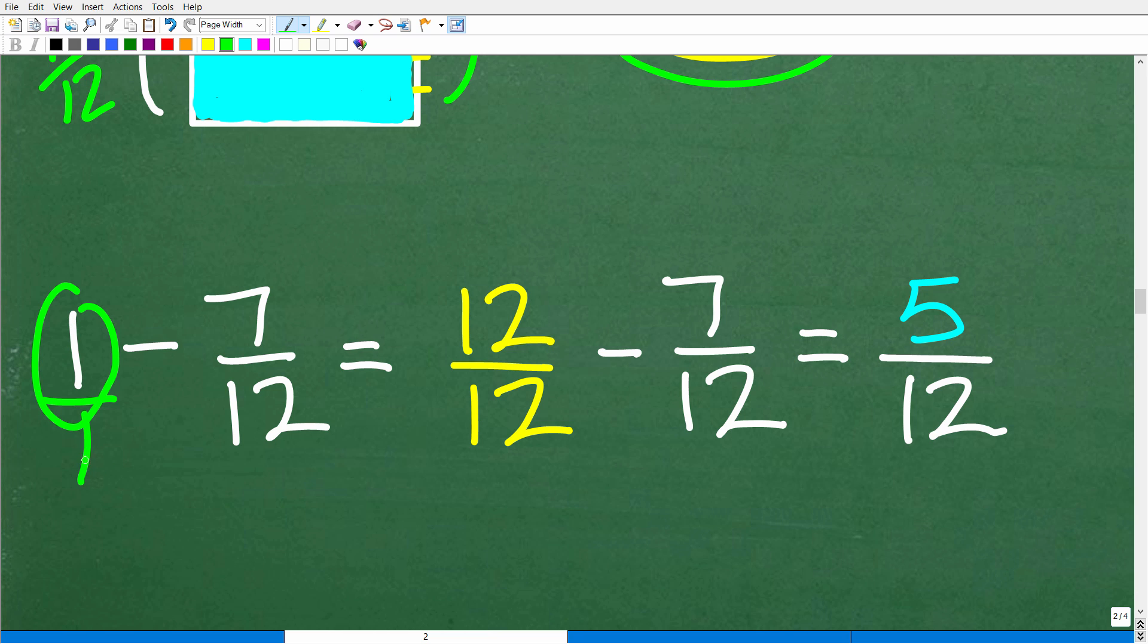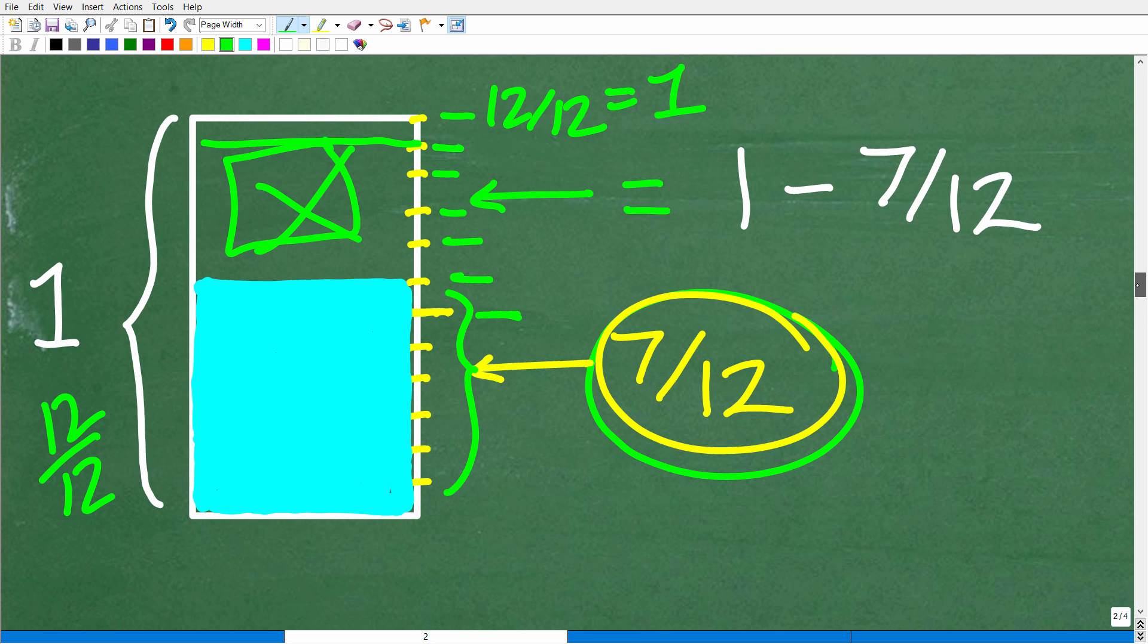Okay. So one, I can express as 12 over 12, because 12 over 12 is one. And of course, now I have common denominators. You can't add or subtract fractions unless the bottom numbers are the same. And once you have the bottom numbers the same, i.e. a common denominator, all we need to do is subtract the respective numerators. So this would be 12 minus seven, which of course is five. So five twelfths of the cup is empty.